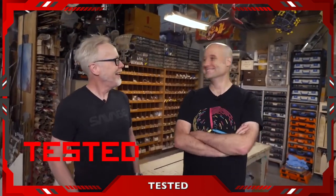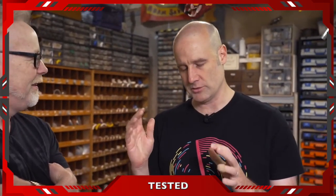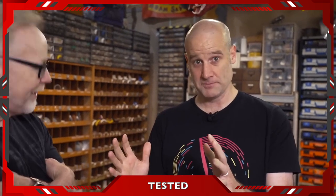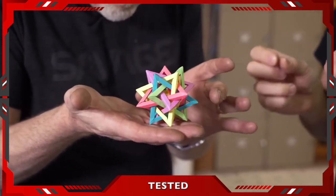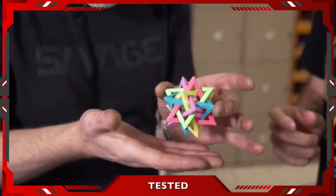In a video by Adam Savage and his YouTube channel Tested, he got together with Matt Parker to create five intersecting tetrahedra. Adam says, I have always wanted to make a shape called the five intersecting tetrahedra. There's a unique challenge with creating the five intersecting tetrahedra, as explained by Matt Parker.